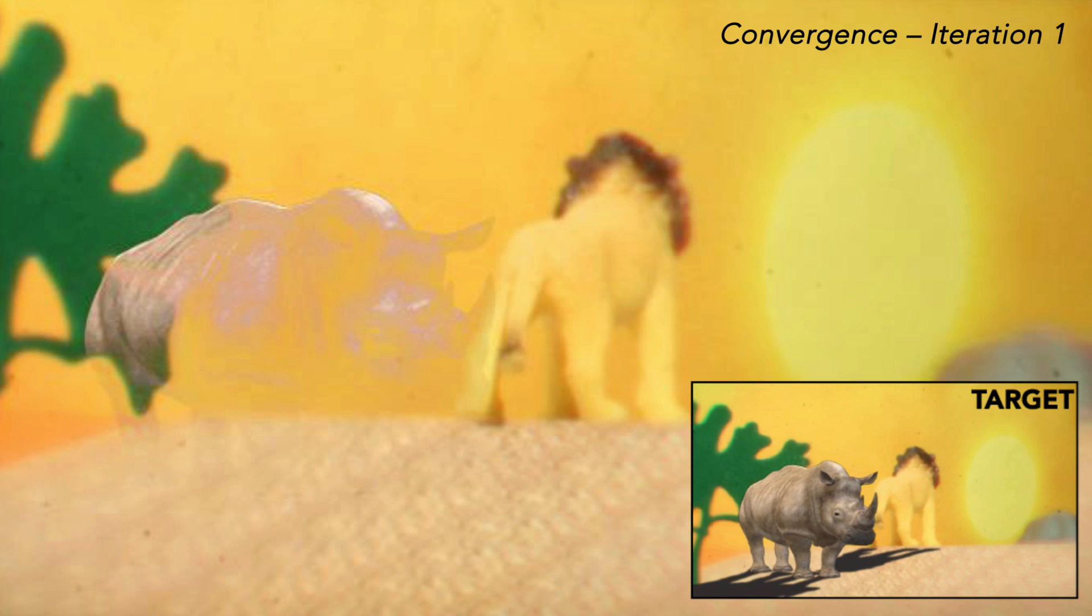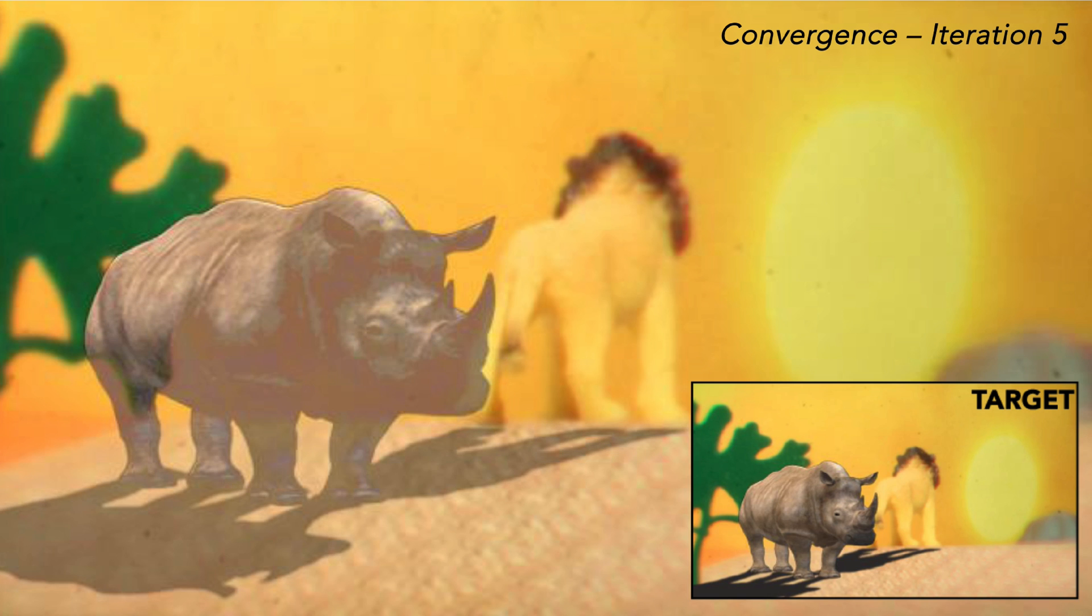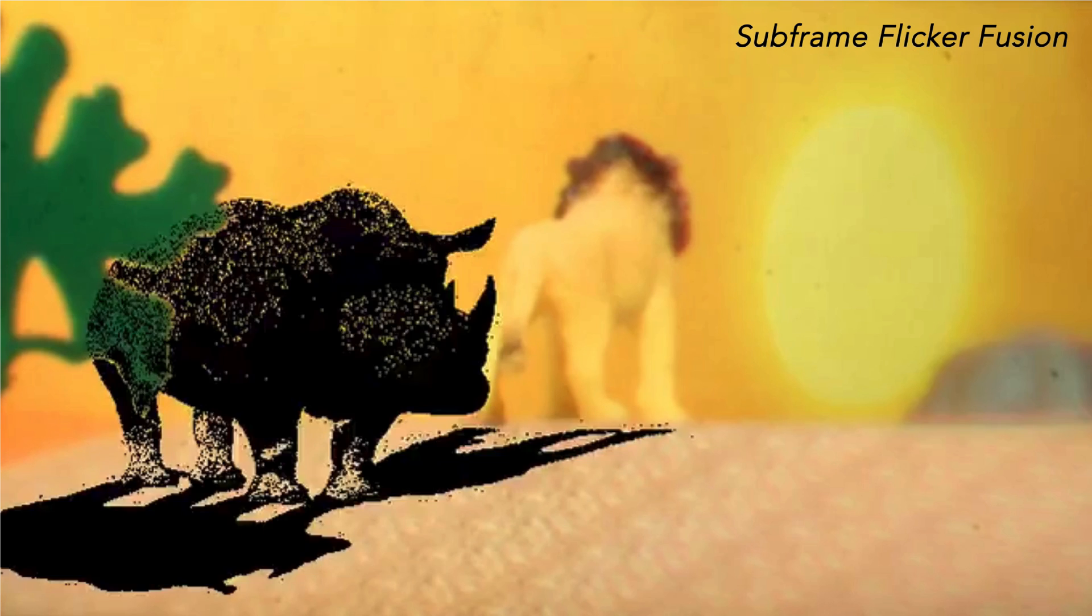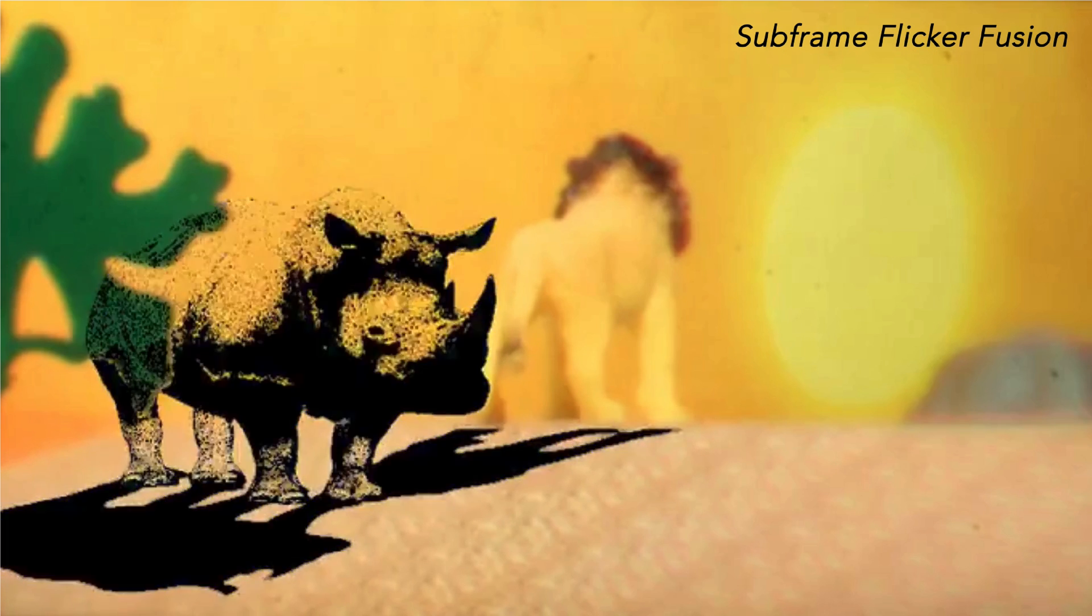So here we have a short snapshot showing how our optimization approach converges towards the optimal result in 10 iterations. And here we show how that optimal DMD and LED states combine under the integration time of the eye to form the final observed image.